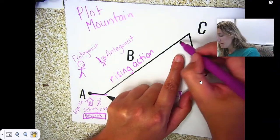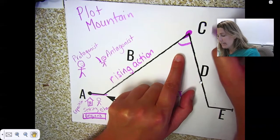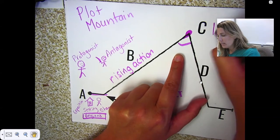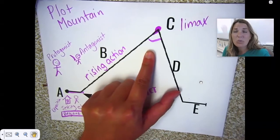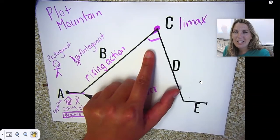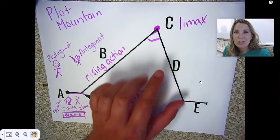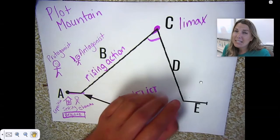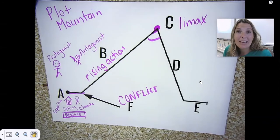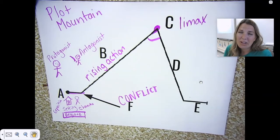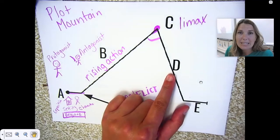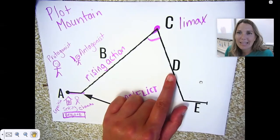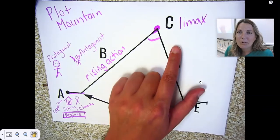The most intense part of the story is called the climax. That is when things start changing for the main character — when the direction starts changing. It's the most intense part of the story. That's usually what you share as a spoiler — that or the resolution.